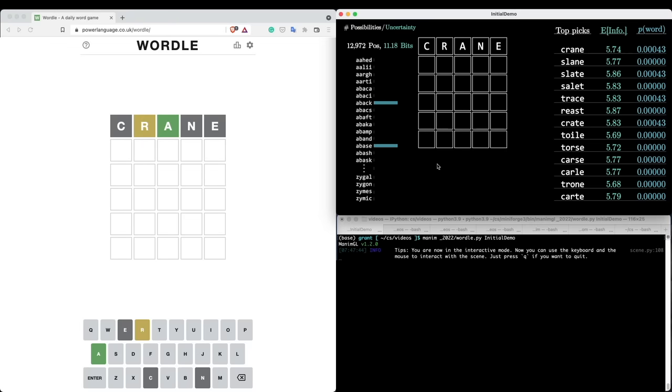Each time that you make a guess, you get some information about how close your guess is to the true answer. Here the gray box is telling me there's no C in the actual answer. The yellow box is telling me there is an R, but it's not in that position. The green box is telling me that the secret word does have an A, and it's in the third position. And then there's no N, and there's no E.